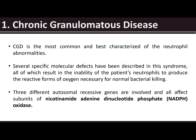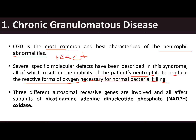Chronic granulomatous disease (CGD) is the most common and best characterized of the neutrophil abnormalities. Several specific molecular defects result in the inability of the patient's neutrophils to produce the reactive forms of oxygen necessary for bacterial killing — the reactive oxygen species responsible for destruction of antigens when phagocytized. There are three different autosomal recessive genes involved, all affecting subunits of NADPH (nicotinamide adenine dinucleotide phosphate) oxidase.